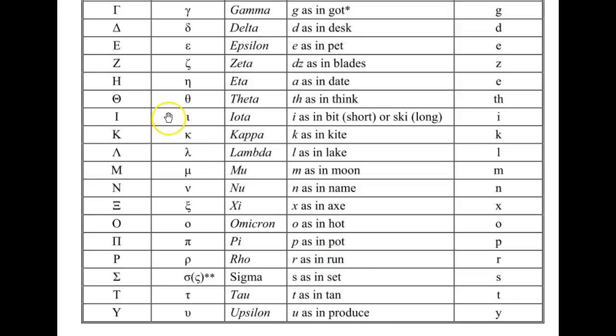Following theta comes Iota. Iota is sometimes pronounced I as in bit, or E as in ski. It's never pronounced as a long I.